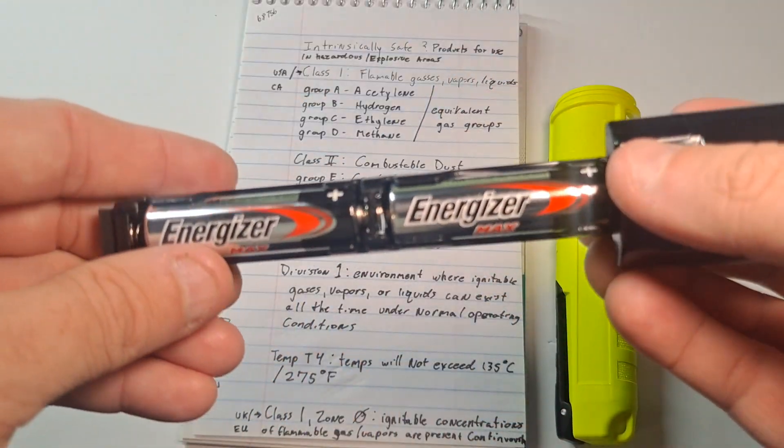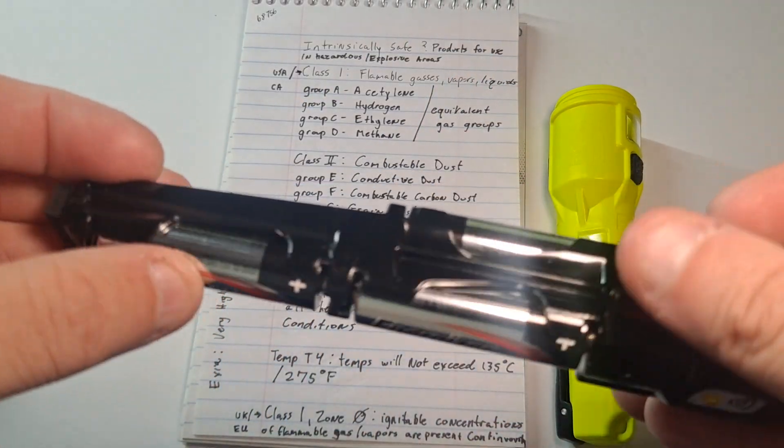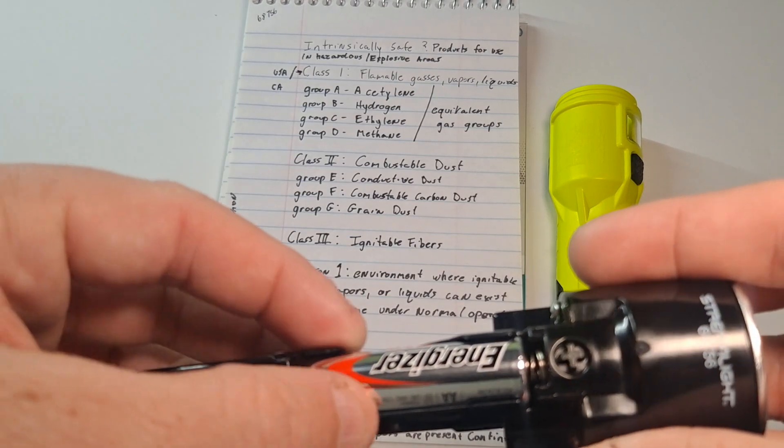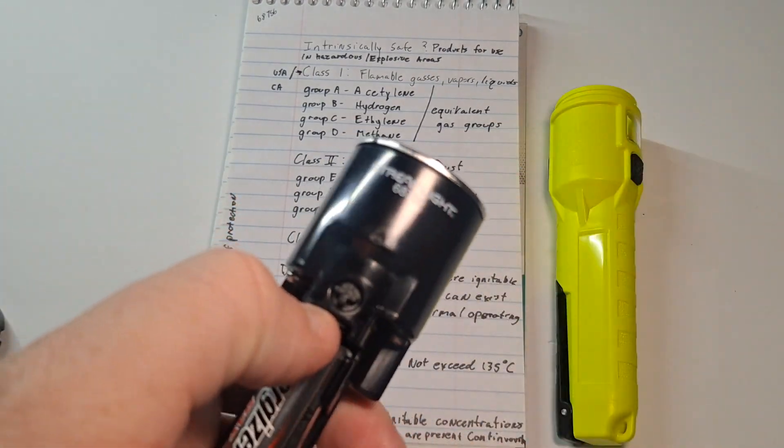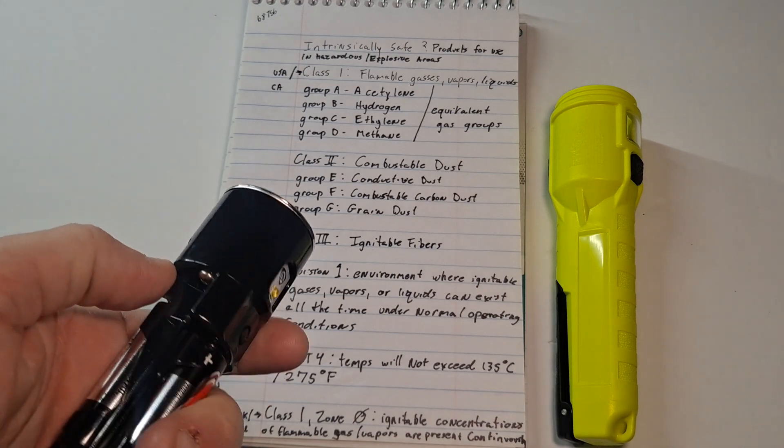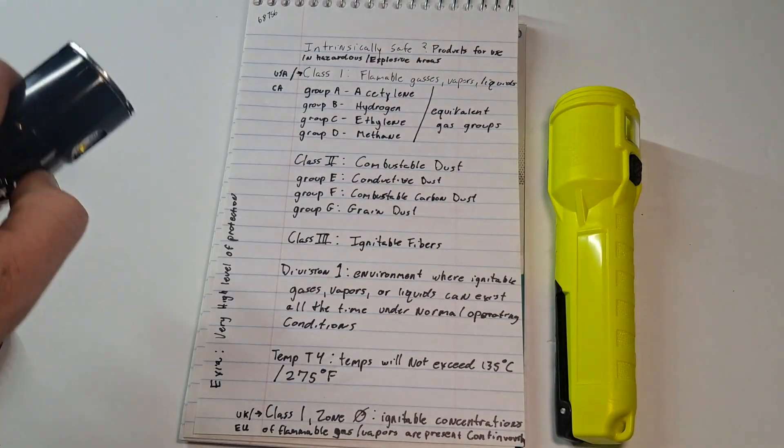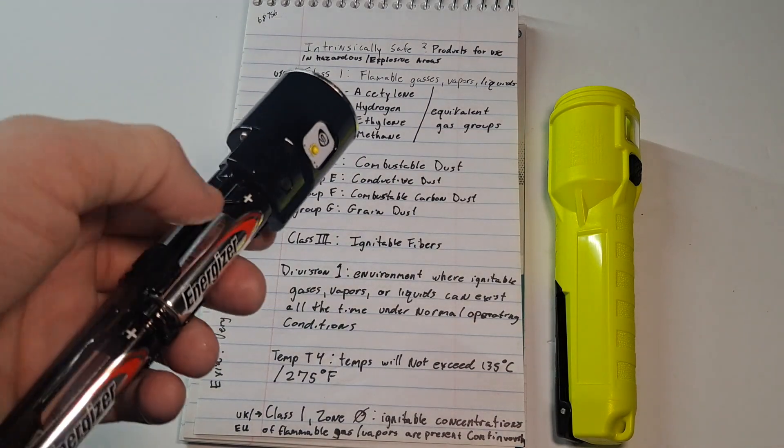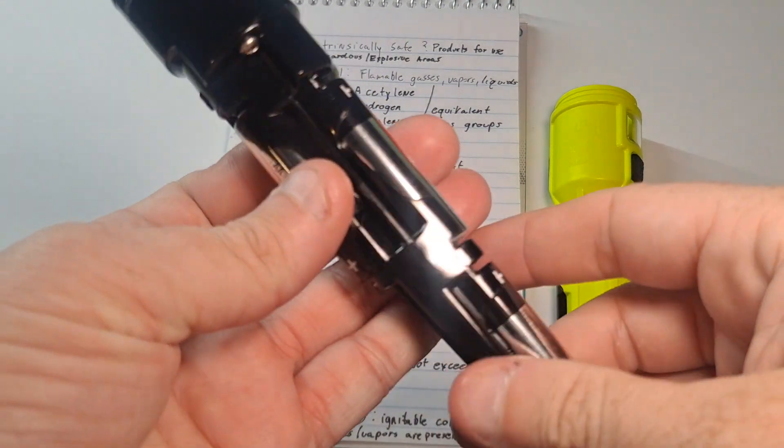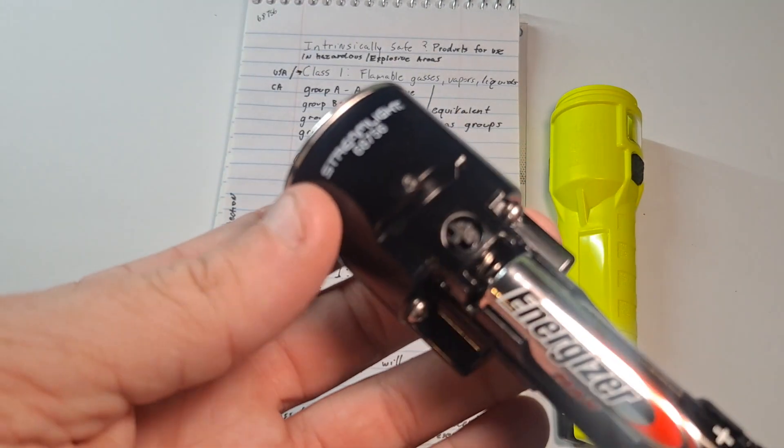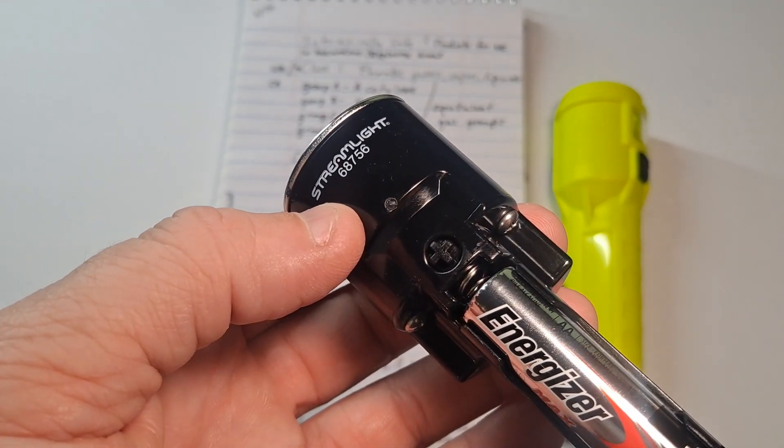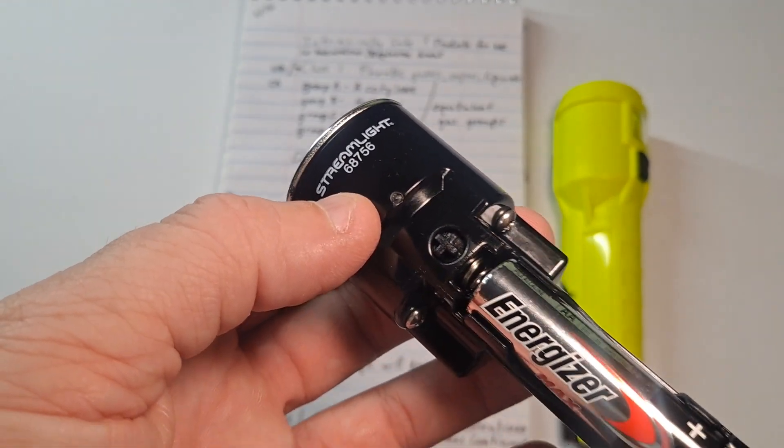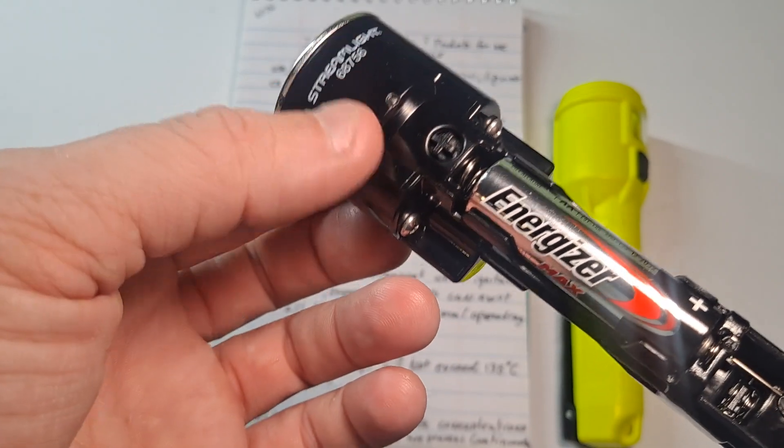So here's the three batteries it comes with. It comes with Energizer Max batteries. They're brand new. Takes three. Pop right in. The little plus sign on top is the front light. And then this little one that's down here is the floodlight. It's hard to tell with all the other lights that's in the room. It's got its own part number on the inside here. Streamlight 68756. And that is of this barrel mechanism, not the light itself.